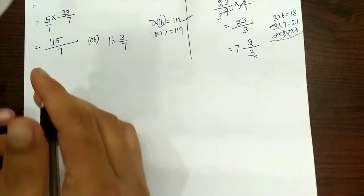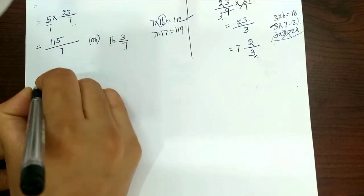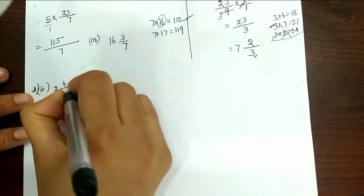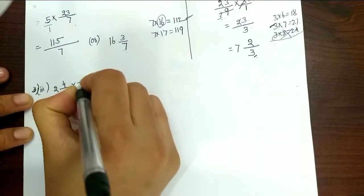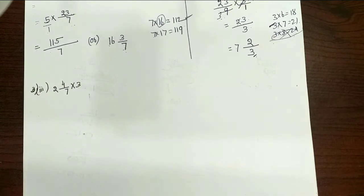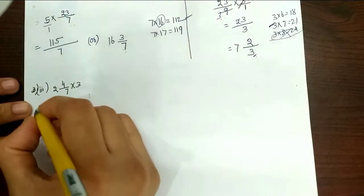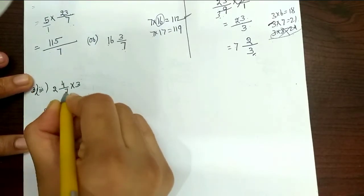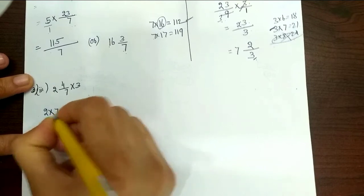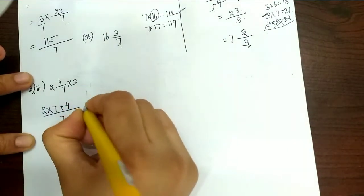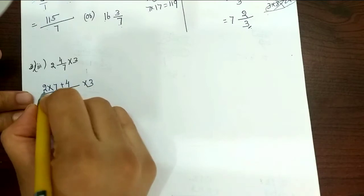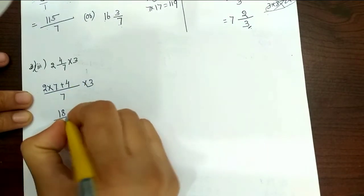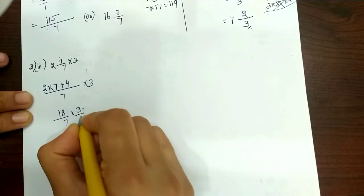Next, third problem: 2 and 4/7 into 3. So same mixed fraction — convert. 2 into 7 plus 4 by 7, into 3. Multiply is 14, 14 plus 4 is 18 by 7, into 3. The 3 is the denominator in the denominator.